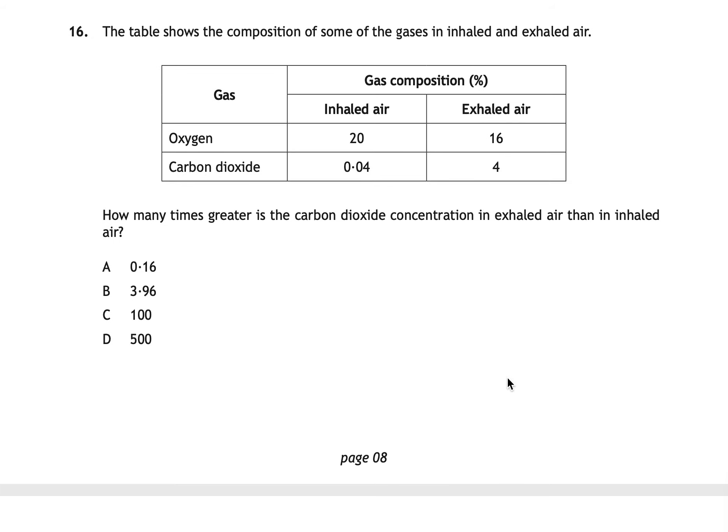Question sixteen shows a table of gas concentrations in inhaled and exhaled air, asking how many times greater the carbon dioxide concentration is in exhaled air than inhaled air. The correct answer is C: 100 times. Exhaled air contains 4% CO₂ and inhaled air contains 0.04% CO₂. Dividing 4 by 0.04 gives 100.